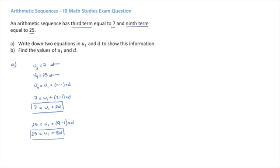For the second question, we're asked to find the values of u1 and d. These are simultaneous equations with two equations and two unknowns. We have two choices here: either use our graphical calculator with a simultaneous equation solver or matrix calculations, or if you do it by hand, here's how we would do it.